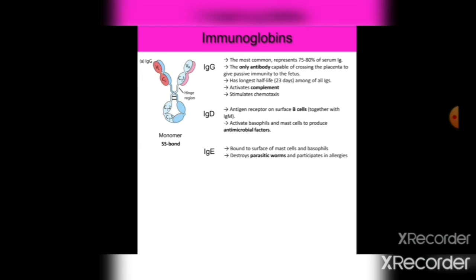Now the topic of immunoglobulins: antibodies are also known as immunoglobulins, classified into five types. IgG is the most common, representing 75–80% of serum immunoglobulins. It is the only antibody capable of crossing the placenta to give passive immunity to the fetus. IgG has the longest half-life of 23 days among all immunoglobulins, activates complement, and stimulates chemotaxis.